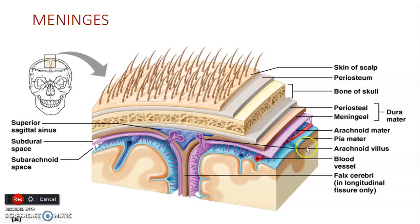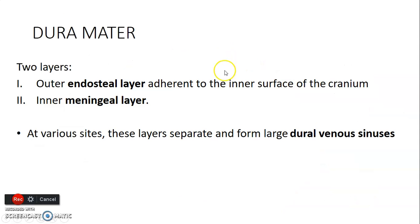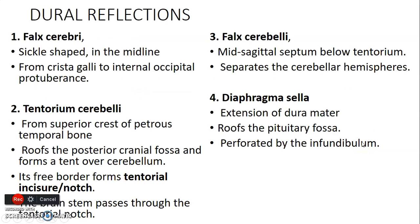The meninges have three layers: dura, arachnoid, and pia mater. The endosteal layer is on the inner surface of the cranium, and the inner meningeal layer at various sites separates to form what we call the dural venous sinuses. We can also ask you to write about dural reflections, of which there are four types.